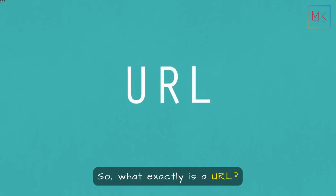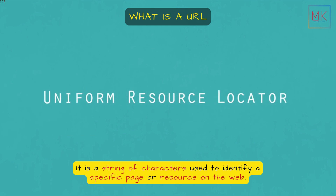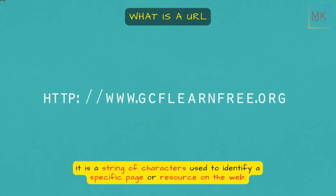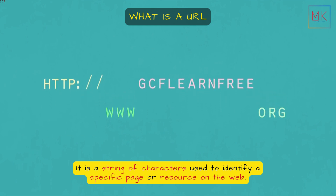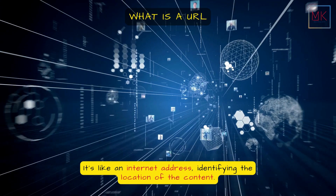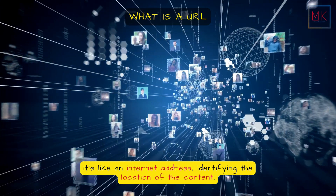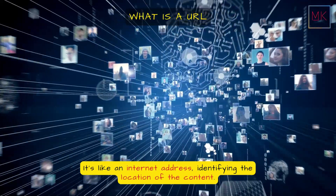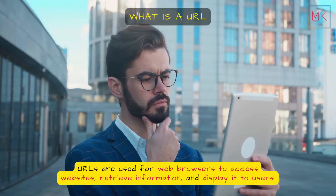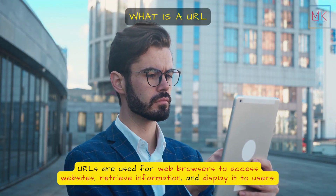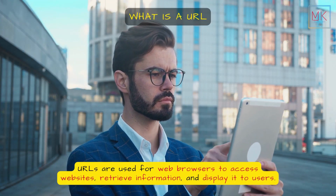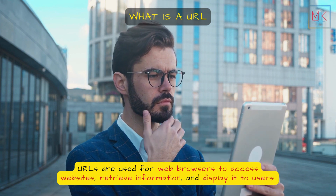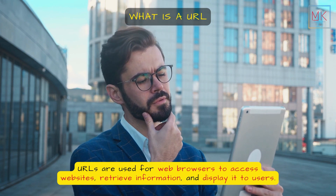So, what exactly is a URL? It is a string of characters used to identify a specific page or resource on the web. It's like an internet address, identifying the location of the content. URLs are used for web browsers to access websites, retrieve information, and display it to users.